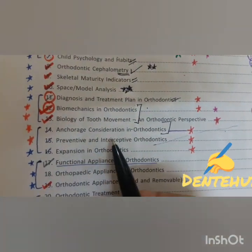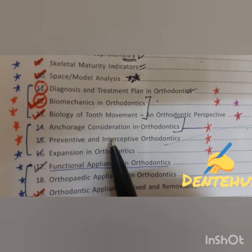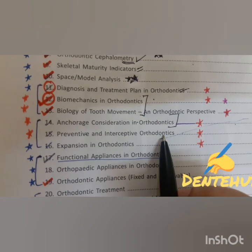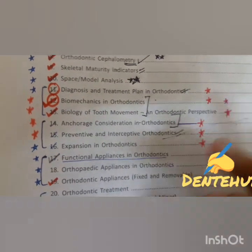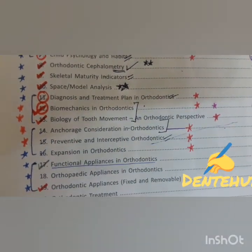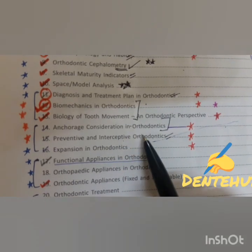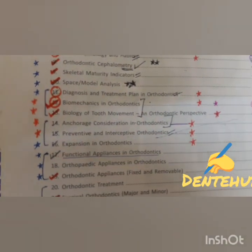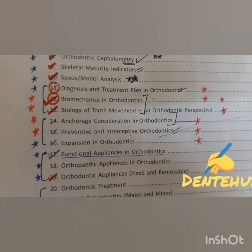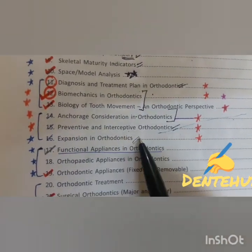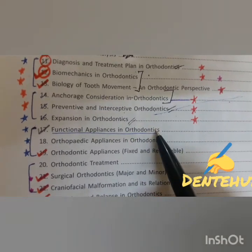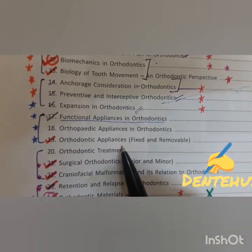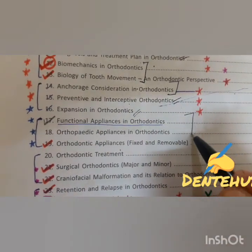Preventive and interceptive orthodontics overlaps with PEDO and needs to be done — do this topic in collaboration with PEDO. Expansion in orthodontics: don't go into too much detail, but it does need to be covered. Then functional appliances, orthopedic appliances, and orthodontic appliances — just have a look through these topics.